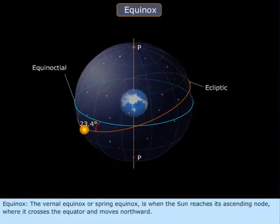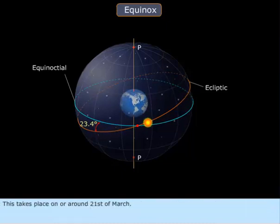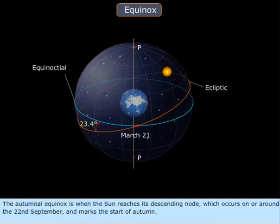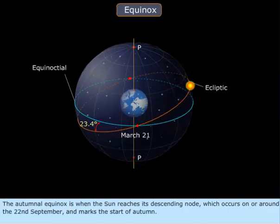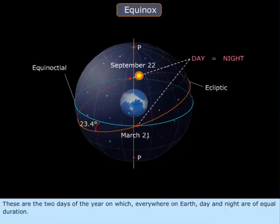Equinox. The vernal equinox, or spring equinox, is when the Sun reaches its ascending node, where it crosses the equator and moves northward. This takes place on or around the 21st of March. The autumnal equinox is when the Sun reaches its descending node, which occurs on or around the 22nd of September, and marks the start of autumn. These are the two days of the year on which, everywhere on Earth, day and night are of equal duration.